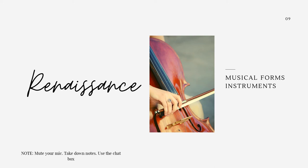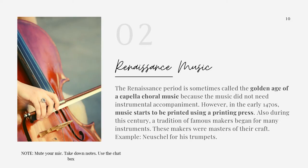Now let's discuss the music of the renaissance period, particularly the musical forms and musical instruments that originated from that era. Renaissance music is sometimes called the golden age of acapella choral music because the music did not need instrumental accompaniment. Most music created during the renaissance period are choral pieces performed by choir. However, in the early 1470s music started to be printed, which increased the distribution of printed music and allowed more people to perform compositions.